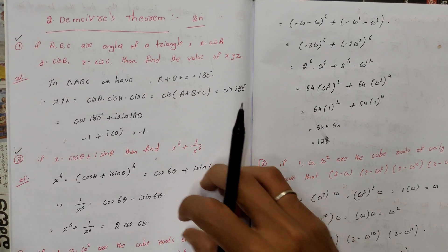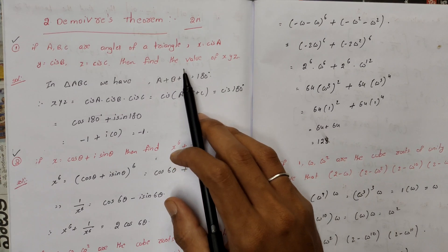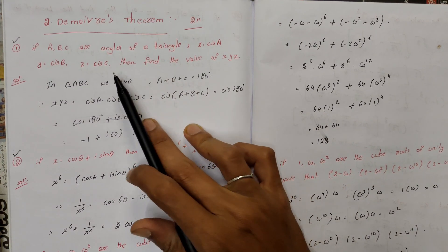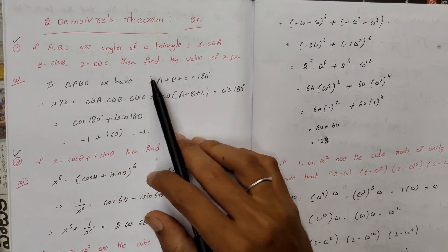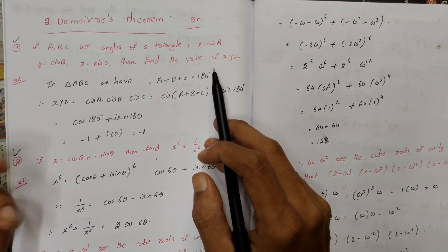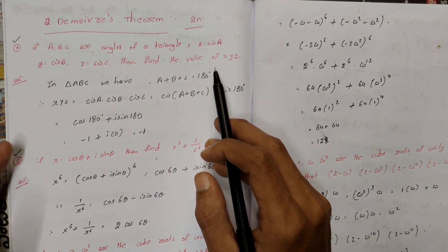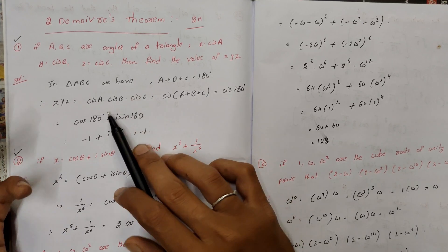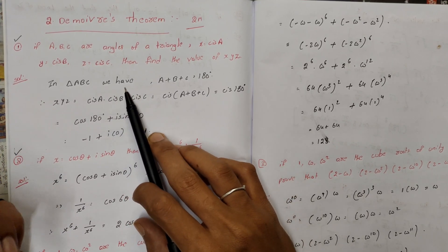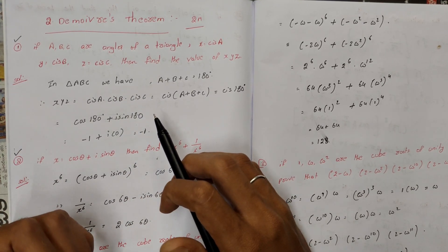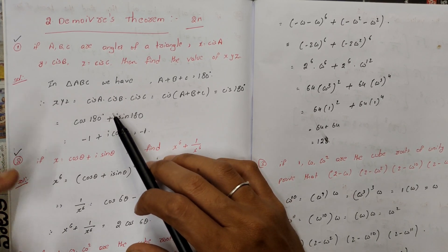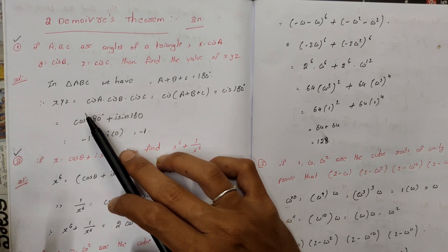First question: If A, B, C are angles of a triangle, x is equal to cos A, y is equal to cos B, z is equal to cos C. Then find the value of x·y·z. This question involves triangle ABC, where A plus B plus C is equal to 180 degrees — three angles summing to 180 degrees.